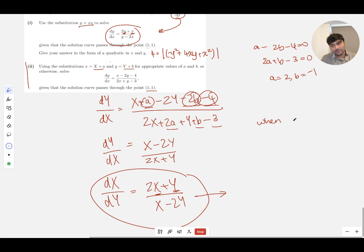So let's just be careful of that. So when lowercase x is 1, capital X is equal to x - a, which is going to be 1 - 2, which is -1. When y is 1, capital Y is going to equal y - b, which is going to be 1 - (-1), which is 2.